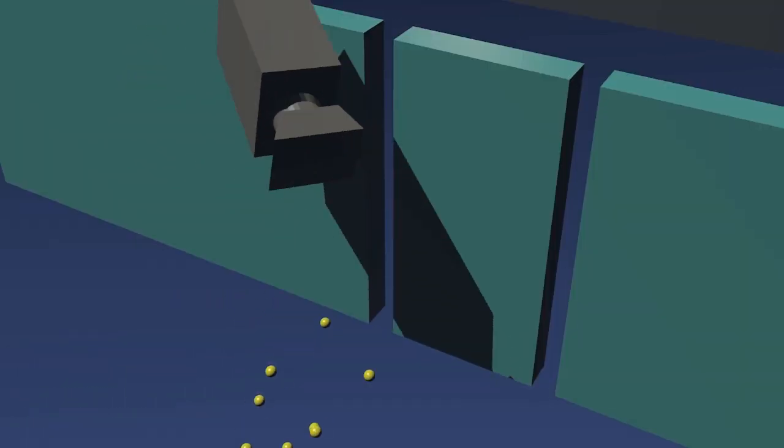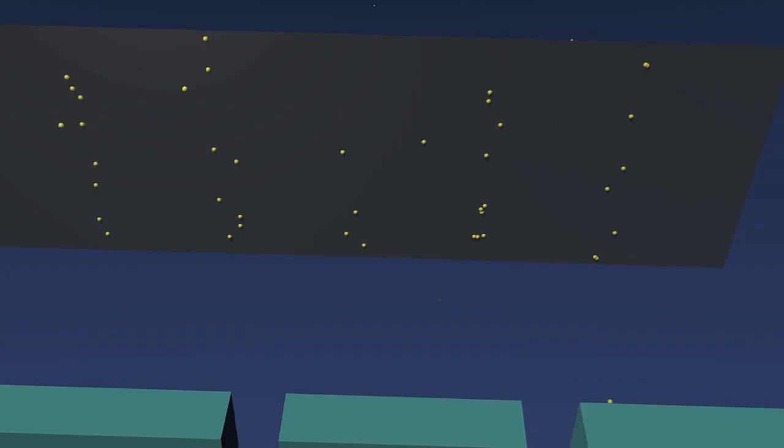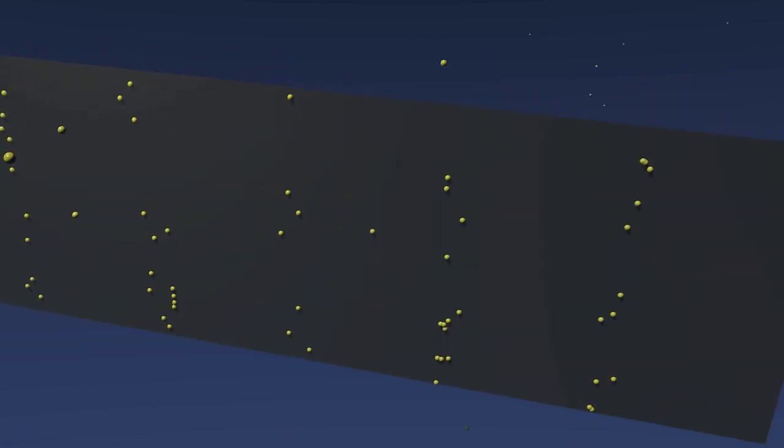When we stop looking at the slits, the interference pattern comes back. The electrons seem to know they're being watched and behave differently.